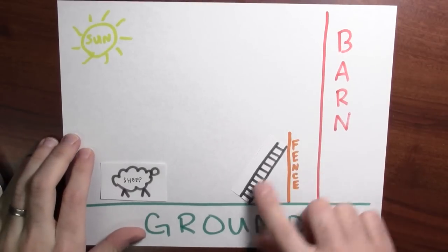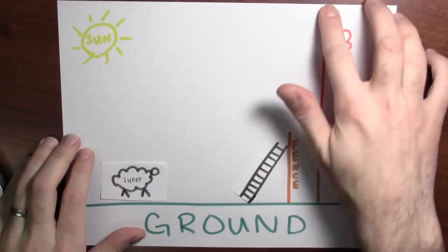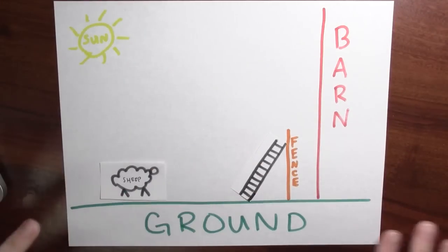I've got a sheep. I've got a fence. I've got a ladder. Here's a really tall barn. Here's the sun shining down on the ground.